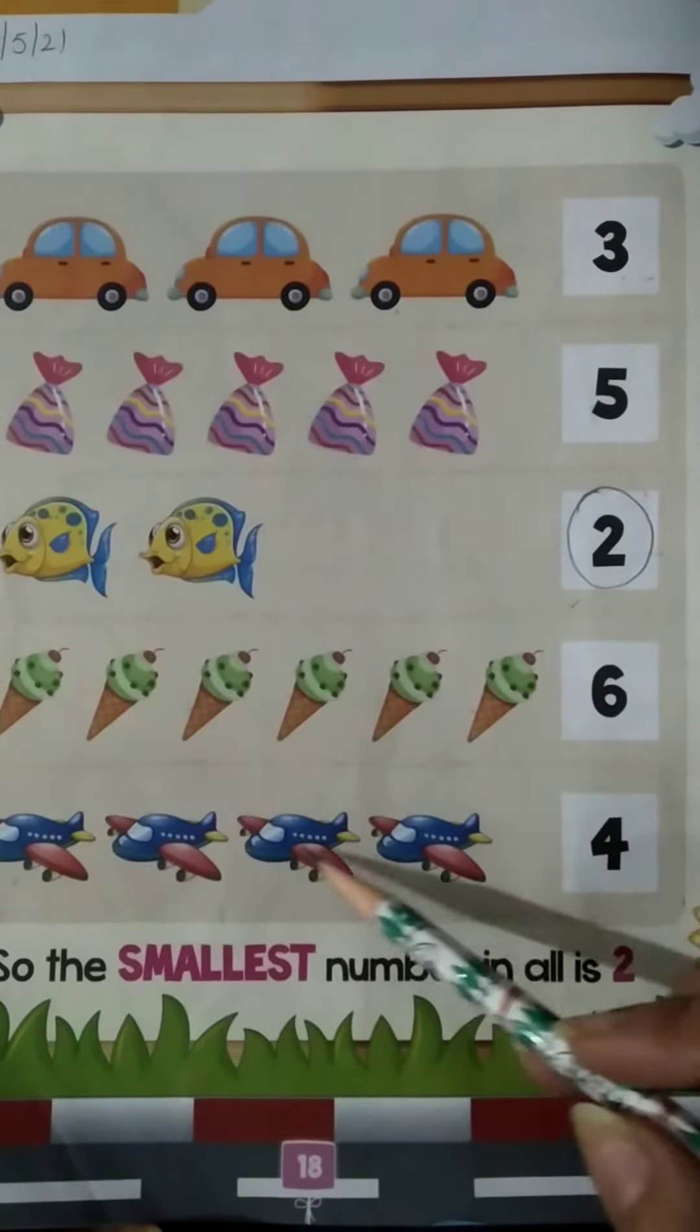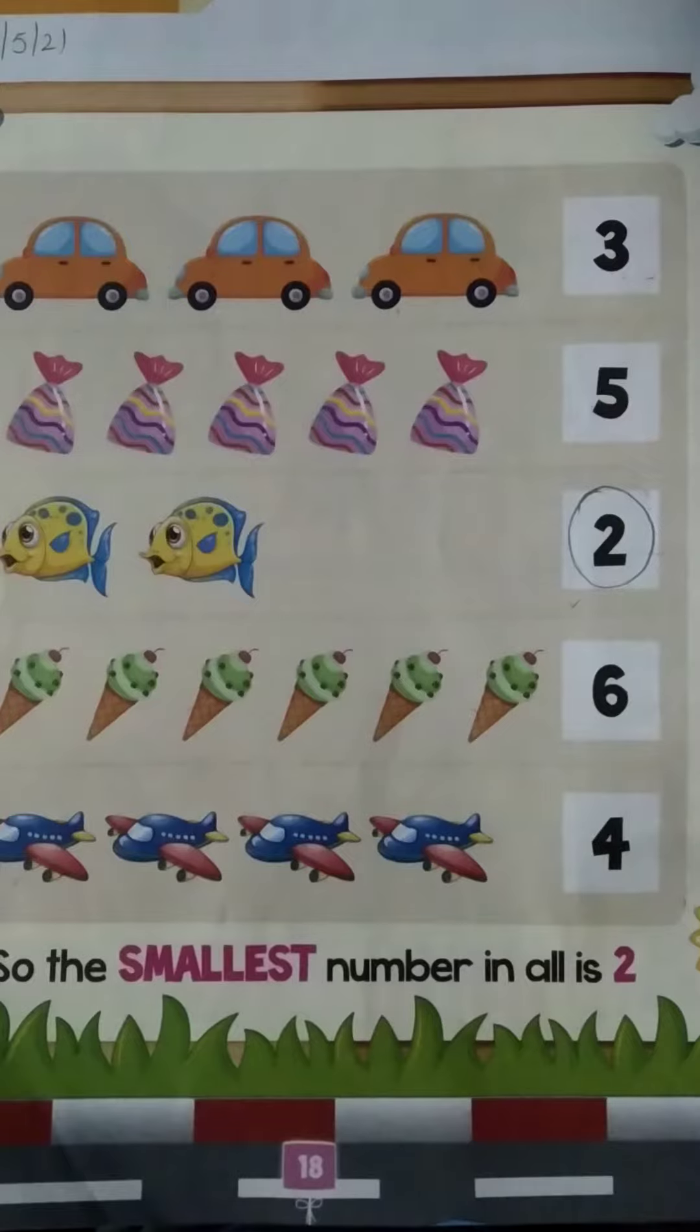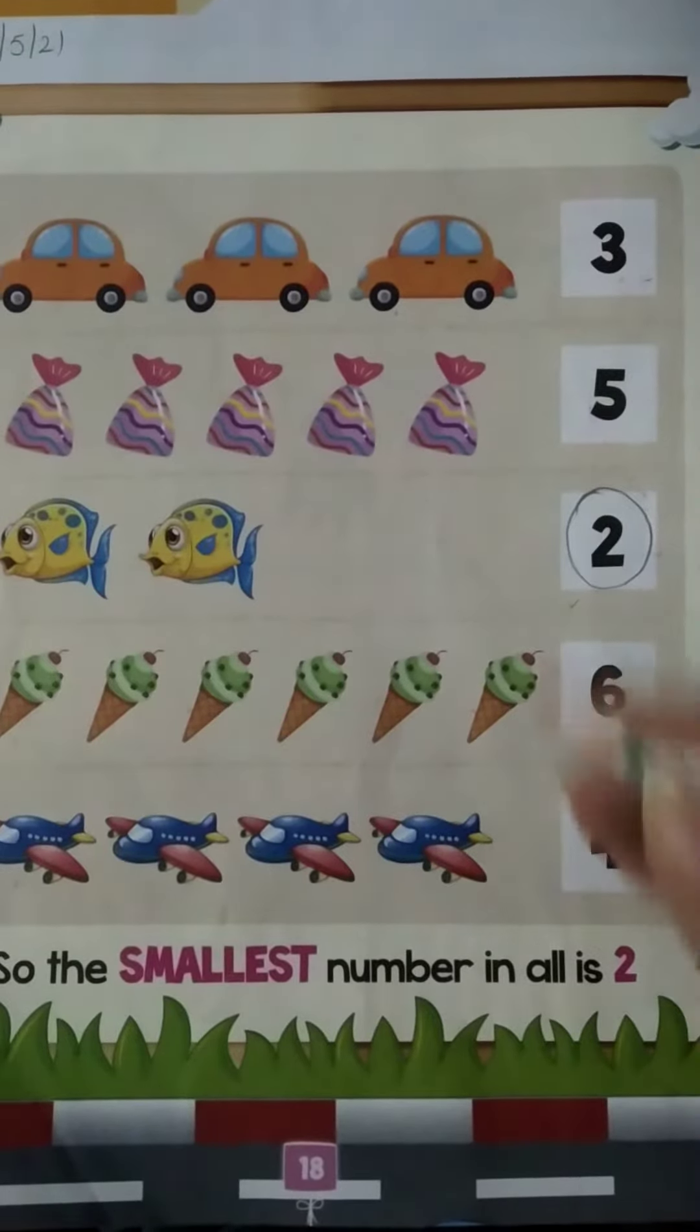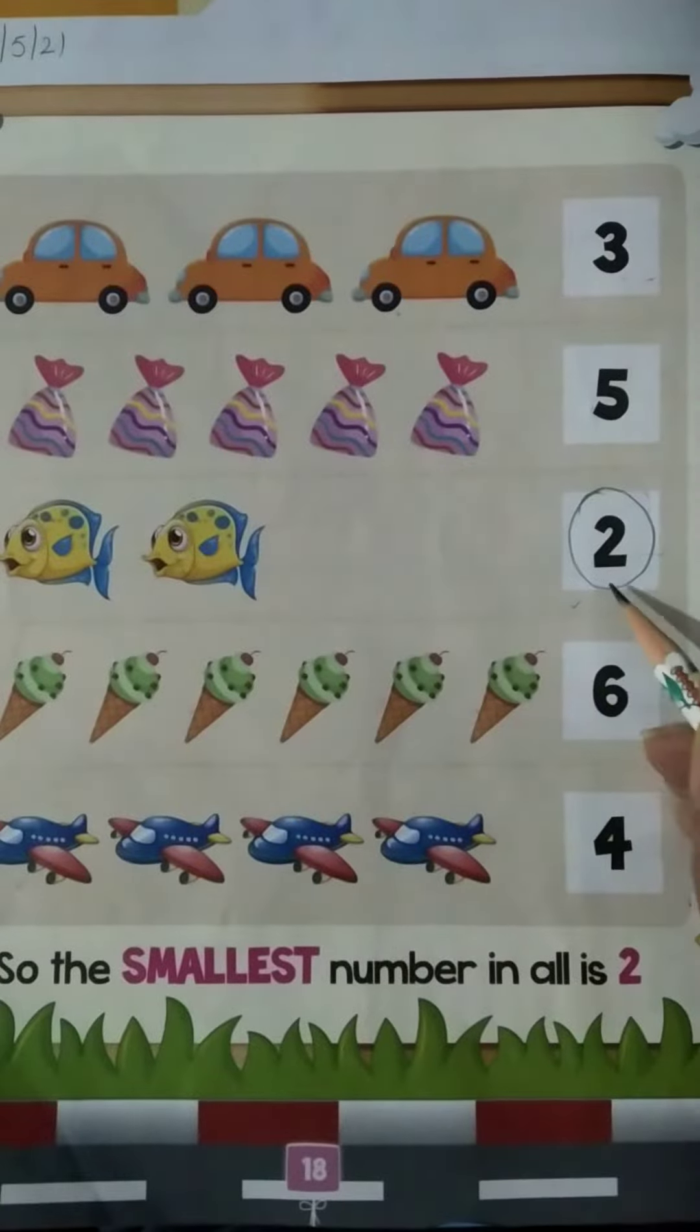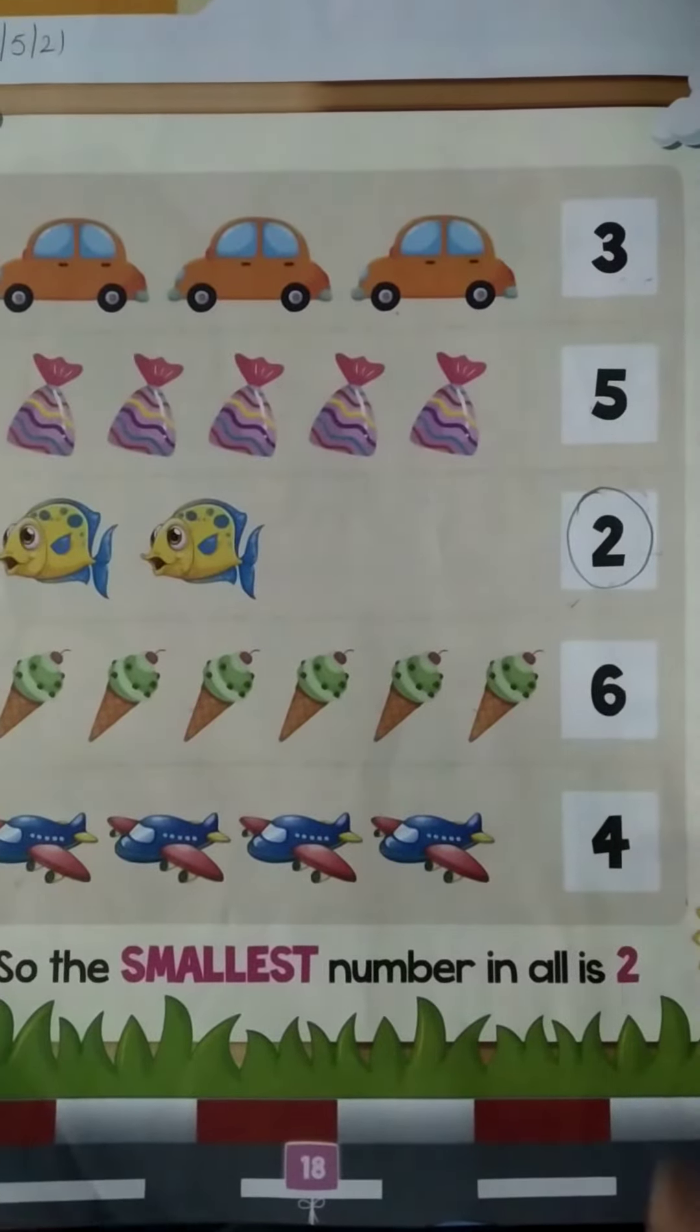1, 2, 3, 4. 4 aeroplanes. Ab smallest number kya hai? Ab aap kus mei se sabse kam kounsa objects dikh rahe hai? Fishes only 2. Toh 2 kya hai? Sabse smallest number hai. Chik hai? Circle the 2.